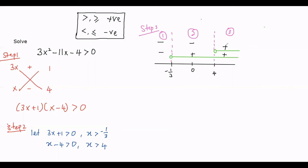Now we multiply the signs: plus times plus gives plus; plus times minus gives minus; and minus times minus gives plus. Since the original inequality is greater than 0, we look for the positive regions. The positive regions are x > 4 and x < −1/3. Therefore the solution is x < −1/3 or x > 4.